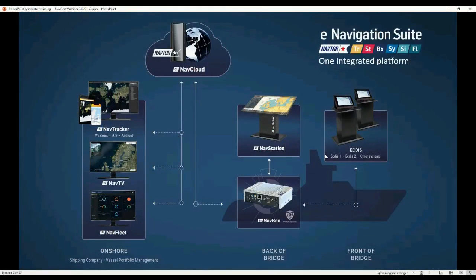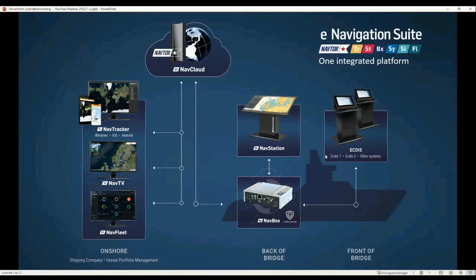I'll jump back to the slide that Richard showed as well. The NavBox is the heart of our ecosystem because it connects with navigation equipment on board. It is also possible to connect to all other types of sensors on board — flow meters, torque meters — and the sky is the limit for what we can send from the NavBox to our cloud service. The NavStation in our complete ecosystem will have dual communication with onshore systems like NavFleet. We are now able to automatically monitor the routes and passage plans which are activated on board, so we don't need to do any manual work in the office.